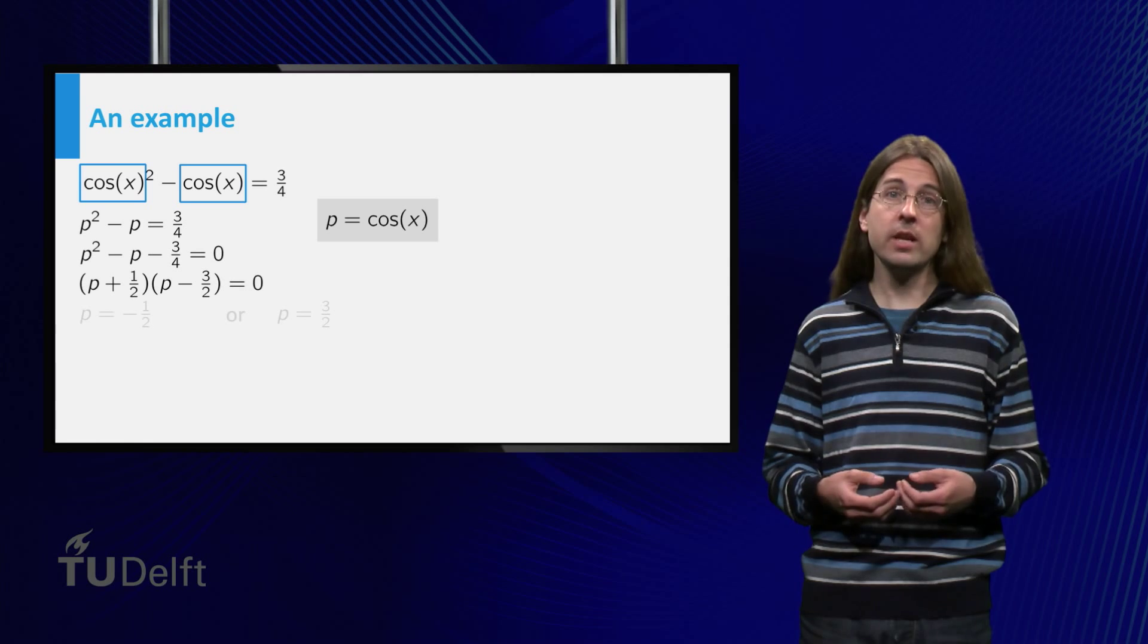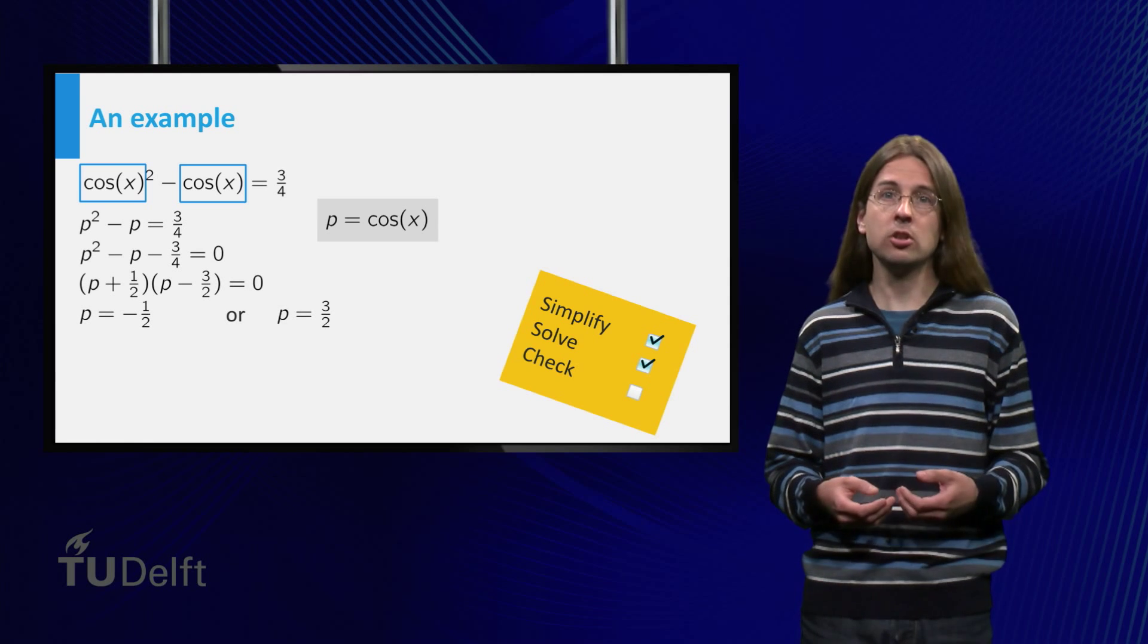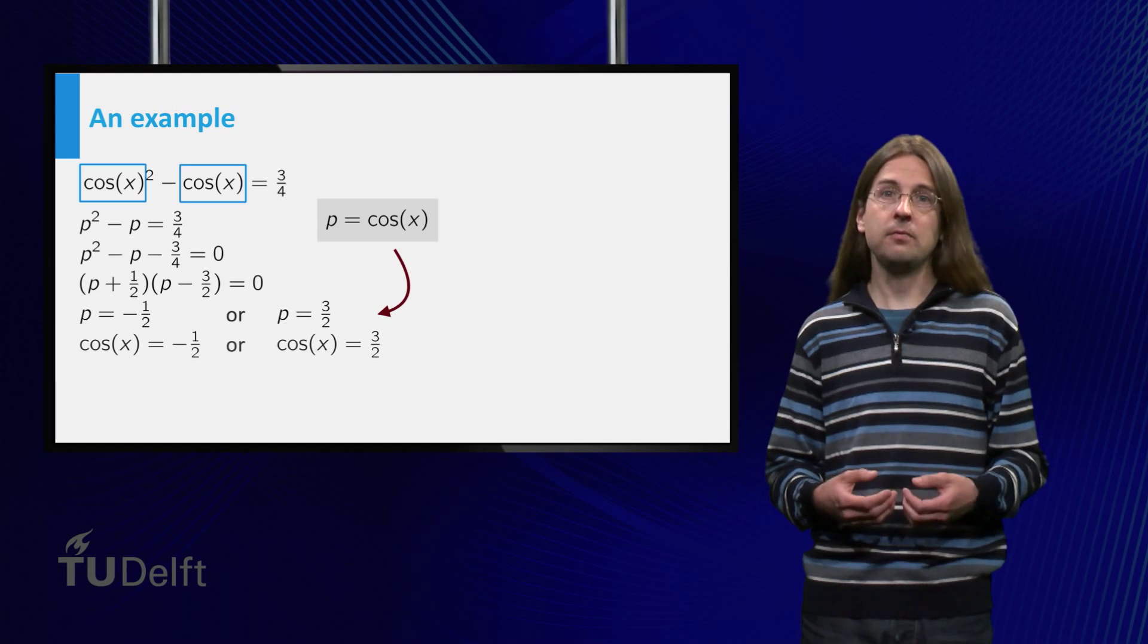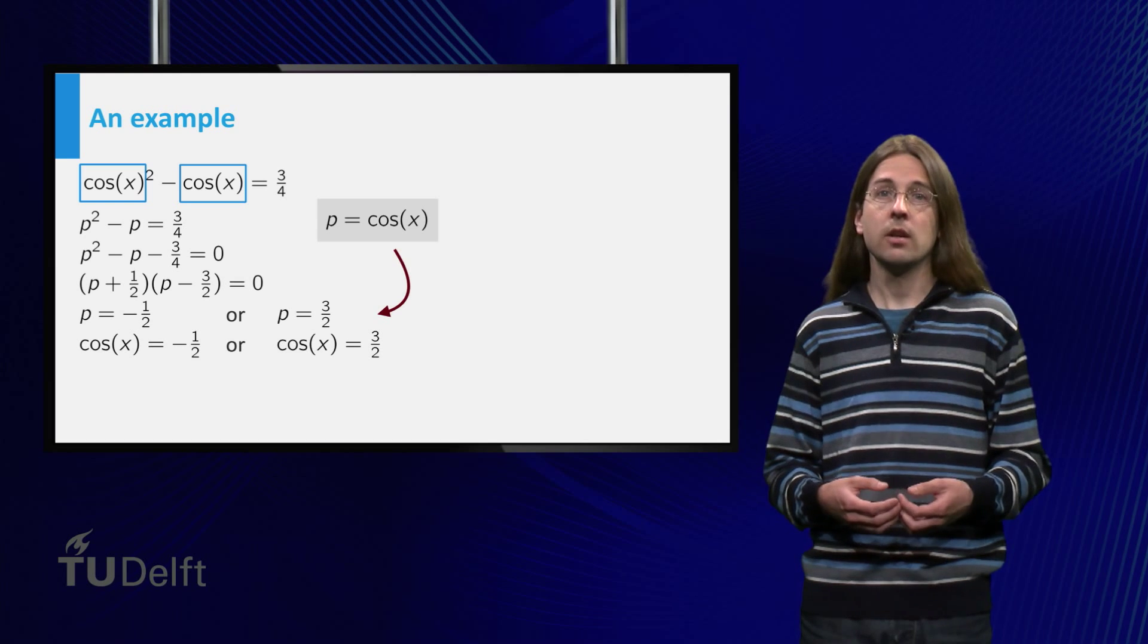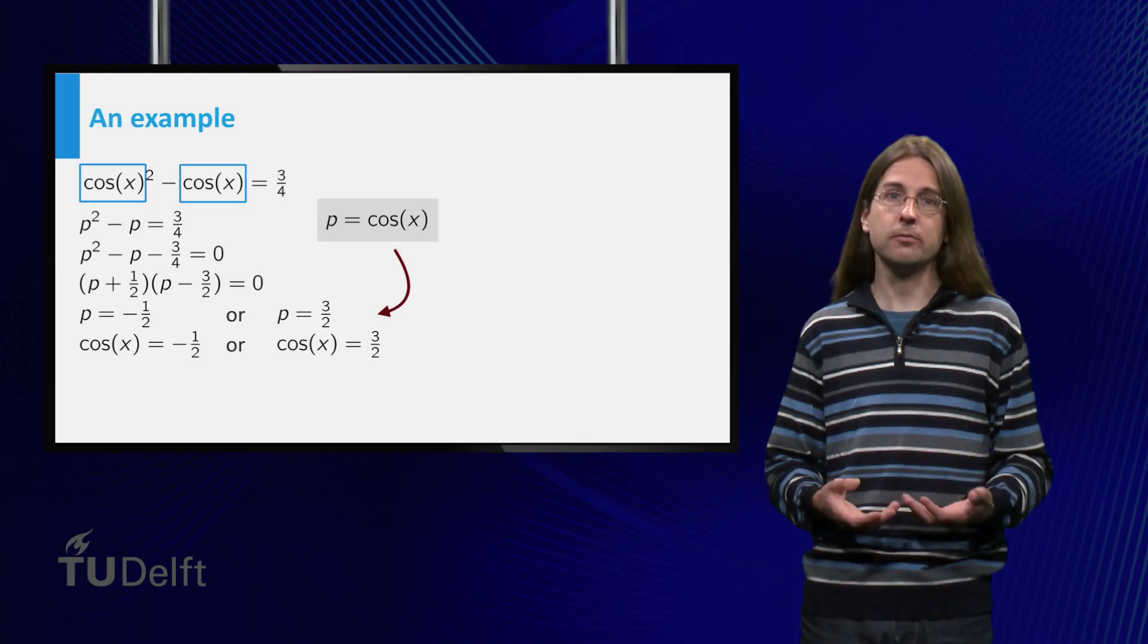We can solve this equation for p, as p = -1/2, or p = 3/2. Thus we find that x satisfies cos(x) = -1/2, or 3/2. We now have two equations of the basic form.